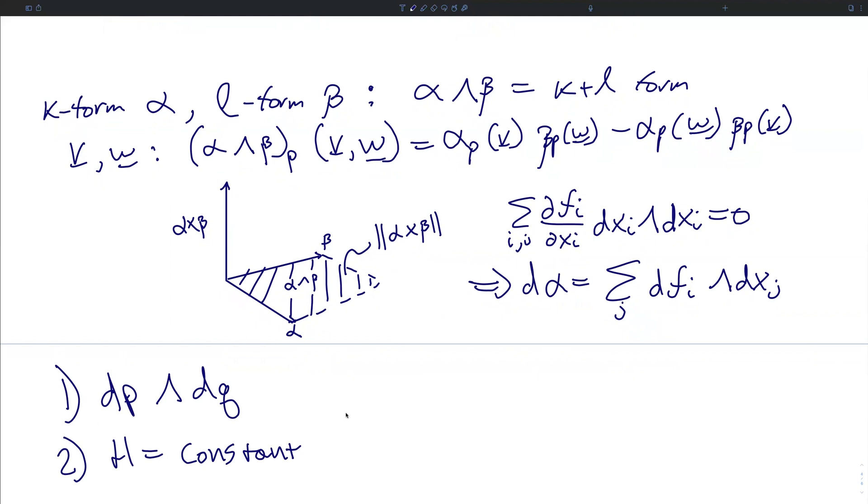Ideally, our numerical integrator must preserve both of these properties when integrating a Hamiltonian system. Otherwise, you are no longer integrating a Hamiltonian system. You're integrating something else.